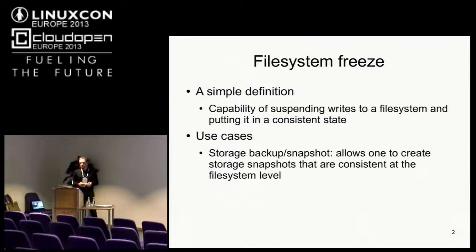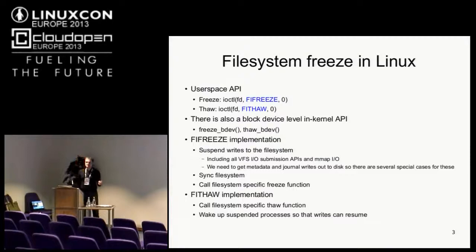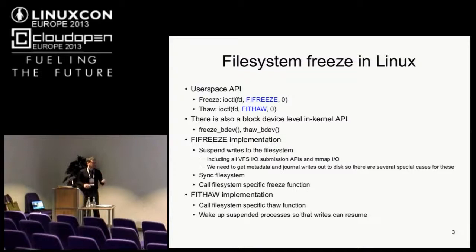How is this implemented in Linux? There are two APIs. One is accessible from user space, implemented using two IOCTLs: FIFREEZE, which is used to freeze the file system, and FITHAW, which is used to unfreeze it. There's another API accessible only from inside the kernel and from kernel modules, implemented at the block device level. Since this is not accessible to users, I will not talk about this one in detail.